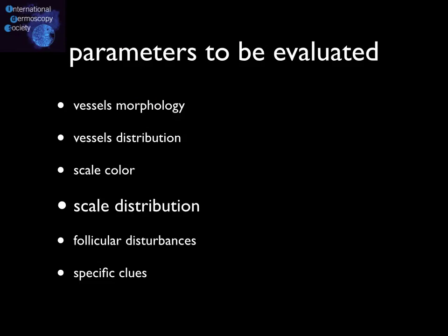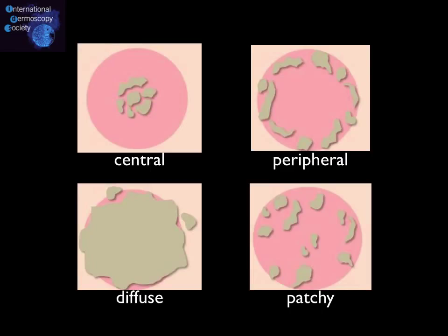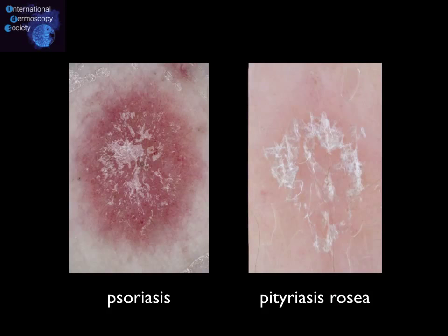The distribution of scales may also be important for the diagnosis of some diseases. Four are the basic distributions of scales that can be seen in inflammatory lesions: central, peripheral, diffuse, and patchy. A characteristic example is psoriasis, which usually displays central white scales or diffuse scales, in contrast to pityriasis rosea, which is typified by a peripheral collarette of fine white scales.